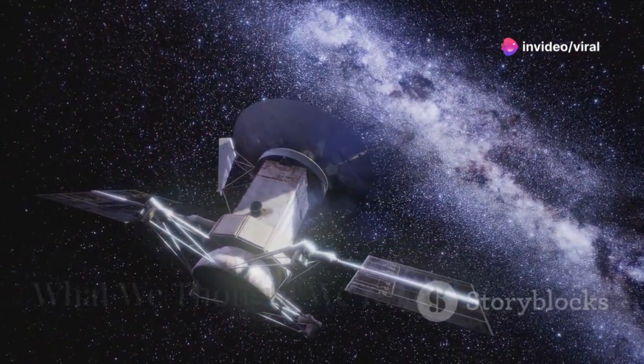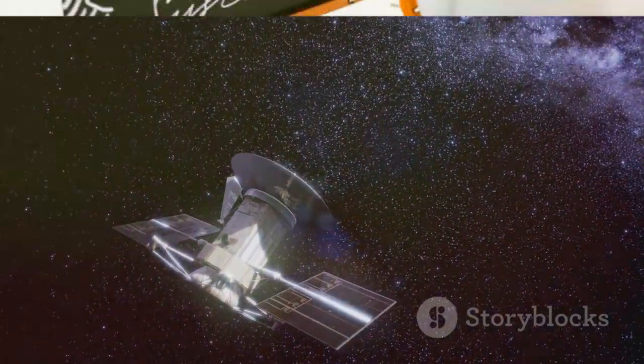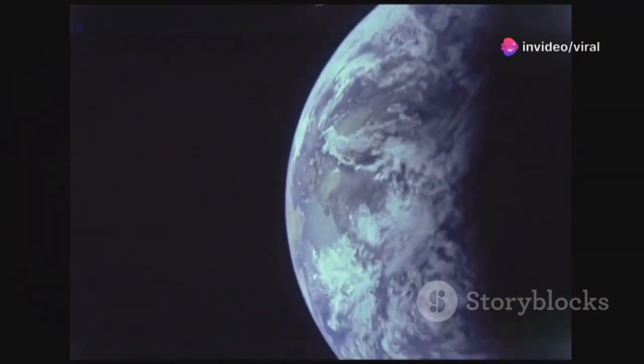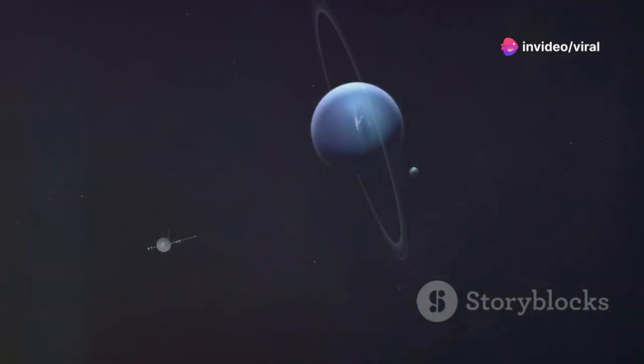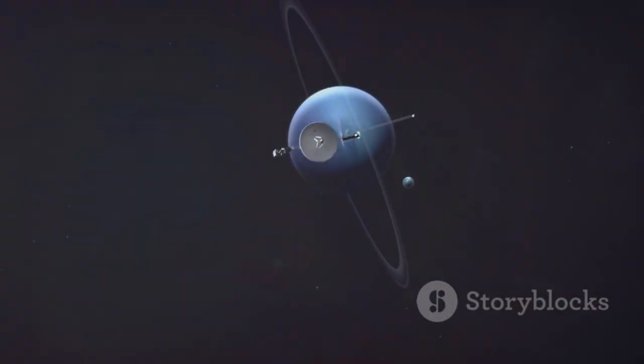Scientists once pictured the edge of our solar system as a clear boundary, the heliopause, where the Sun's influence ends. The solar wind, a stream of charged particles, was expected to stop abruptly, while cosmic rays from deep space would surge in. The Sun's magnetic field, carried by the solar wind, was thought to shift dramatically at this border, marking entry into interstellar space.